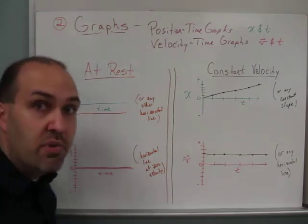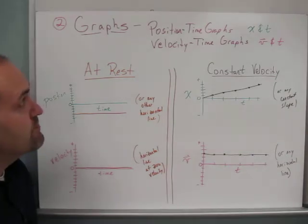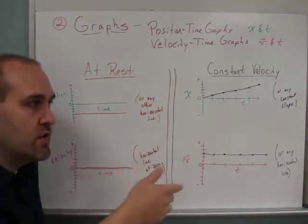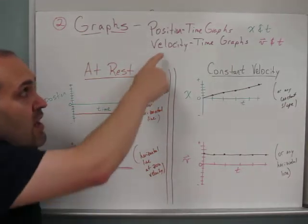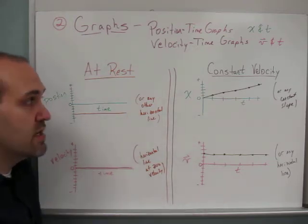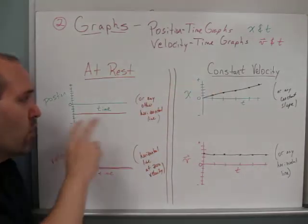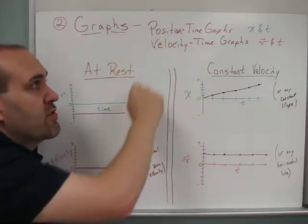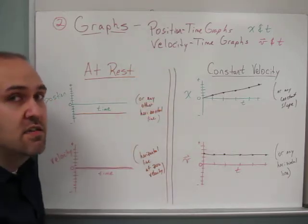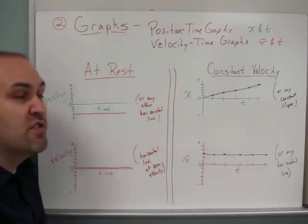Now we're moving on to the second method of describing motion: using graphs. We have two graphs — one shows position as a function of time, telling us where the object is as time goes on, and another shows velocity as a function of time. The abbreviation for position is x, t is used for time, and v is used for velocity. Because velocity is a vector, you put a little arrow over the v to indicate that direction matters.